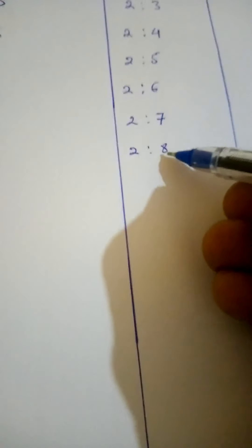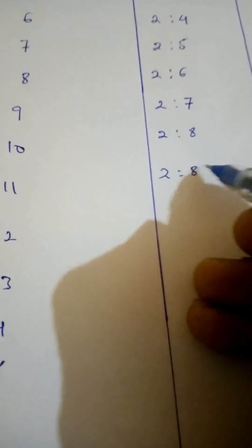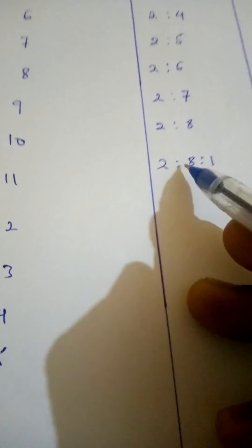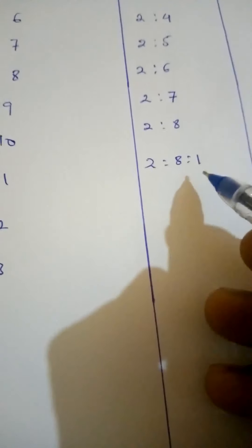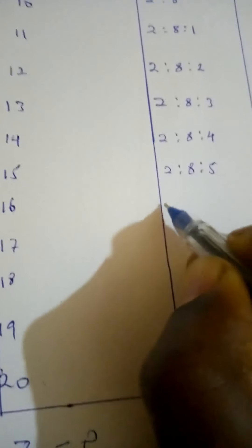You see this one now? This is the maximum number of electrons that cannot supply the second energy level. That means when we approach to the eleventh one, we are not going to say two to nine, because nine cannot go there. So we shall say two to eight to one. Two plus eight, ten plus one, eleven, and so on, two to eight to two, two to eight to three, two to eight to four. So, are we together? Hope you are enjoying. Two to eight to five. Two to eight to six. Two to eight to seven. Are we together? Two to eight to eight.